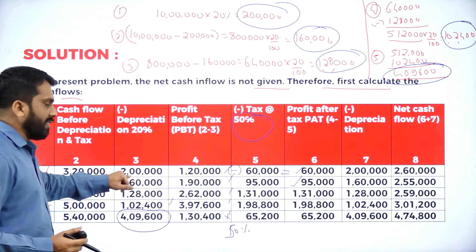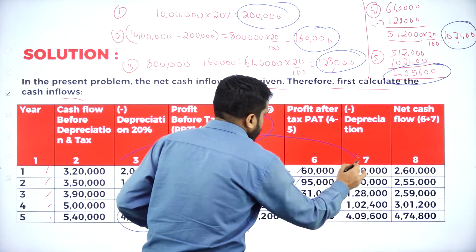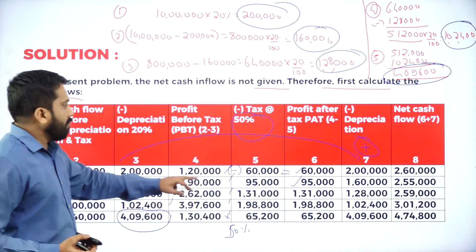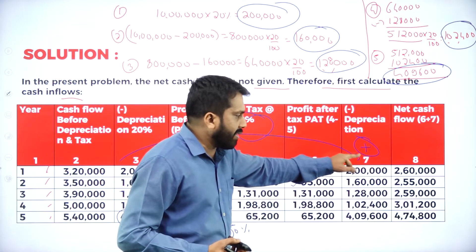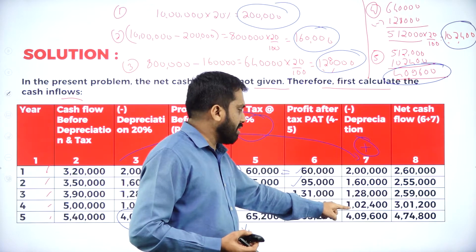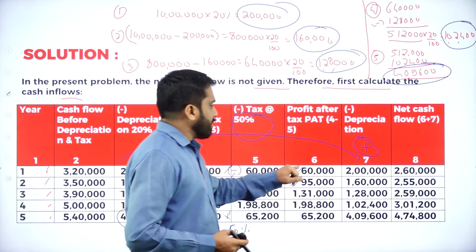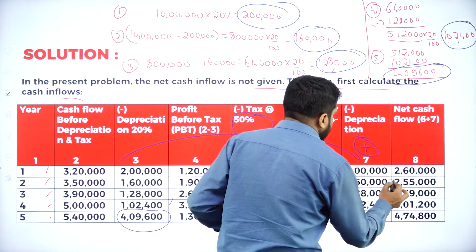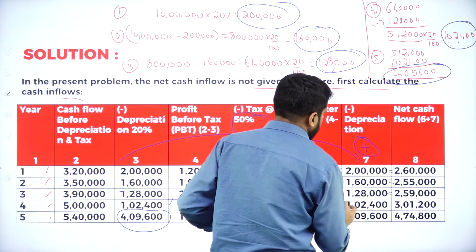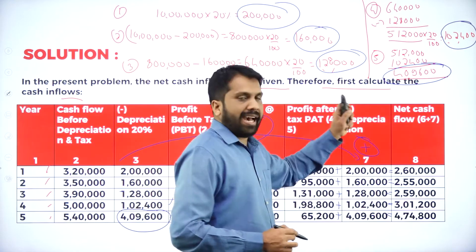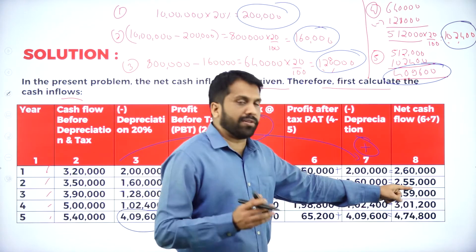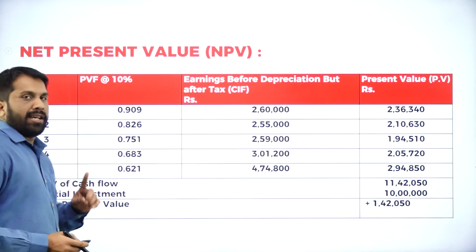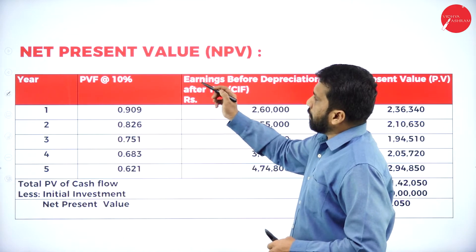Whatever depreciation was deducted — 2 lakh, 1 lakh 60, 1 lakh 28, 1 lakh 2400, 4 lakh 9600 — we add it back, because depreciation was deducted only for tax purposes; once tax is done, add it back. The resulting net cash flows are: Year 1 = 2 lakh 60 thousand, Year 2 = 2 lakh 55 thousand, and so on. If it's a 5-mark question, only the net cash flow is given directly.